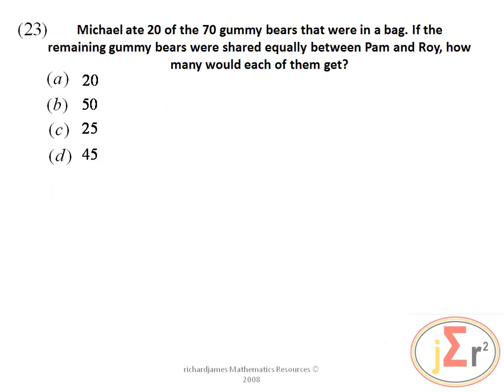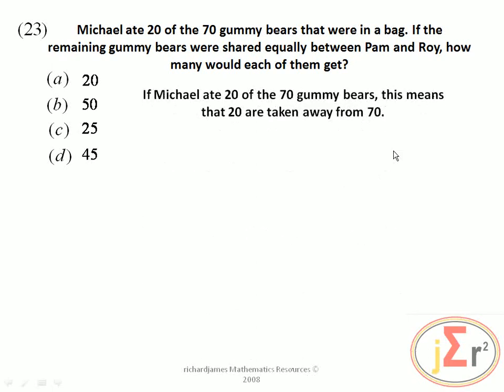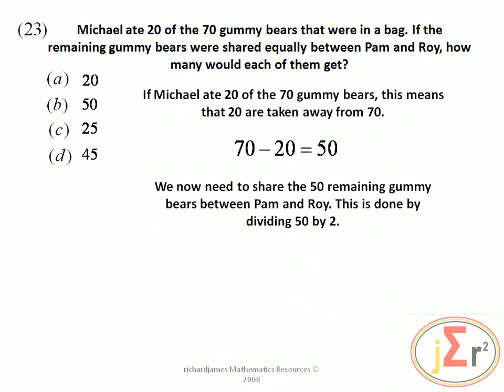Michael ate 20 of the 70 gummy bears that were in a bag. If the remaining gummy bears were shared equally between Pam and Roy, how many would each of them get? Michael ate 20, so 20 are taken away from 70, leaving 50. We divide 50 by 2 and the answer is 25, represented by option C.